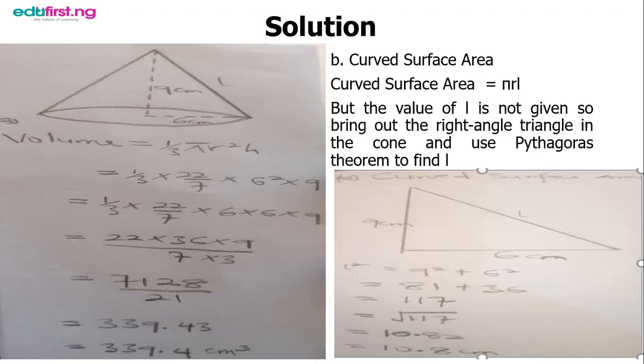Having multiplied all the numerators together, I got 7,128 over the denominator 7×3, which is 21. By the time you divide, you have 339.43.